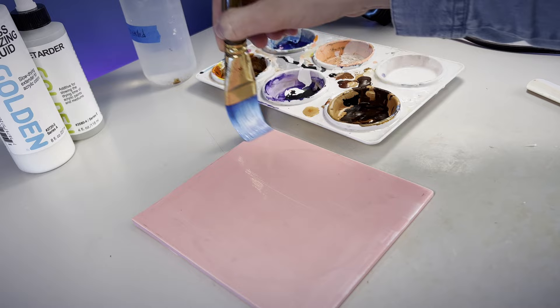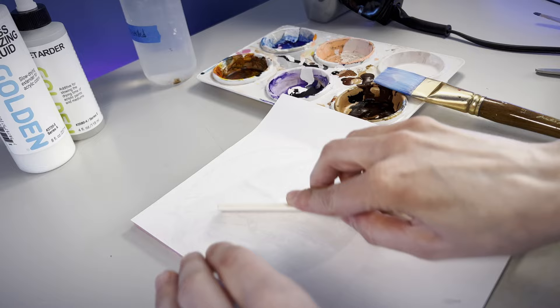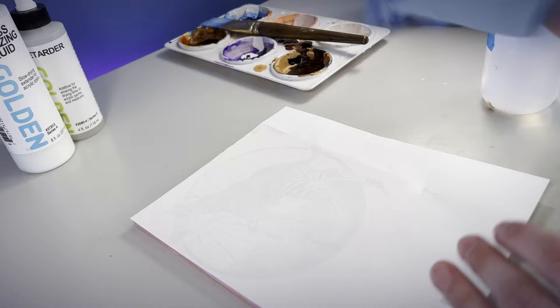I coat the block with slow drying acrylic mediums and transfer the freshly printed design smoothing with a paper folder. This time I leave the design and acrylic to dry and then wet the back of the paper and start to remove it.